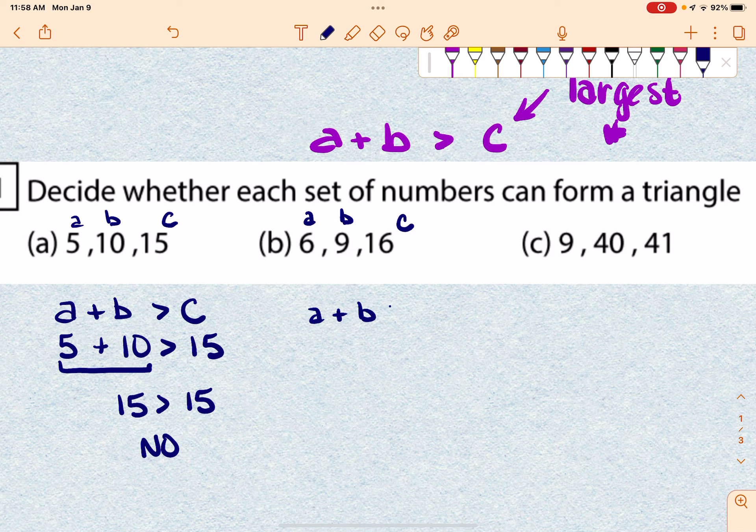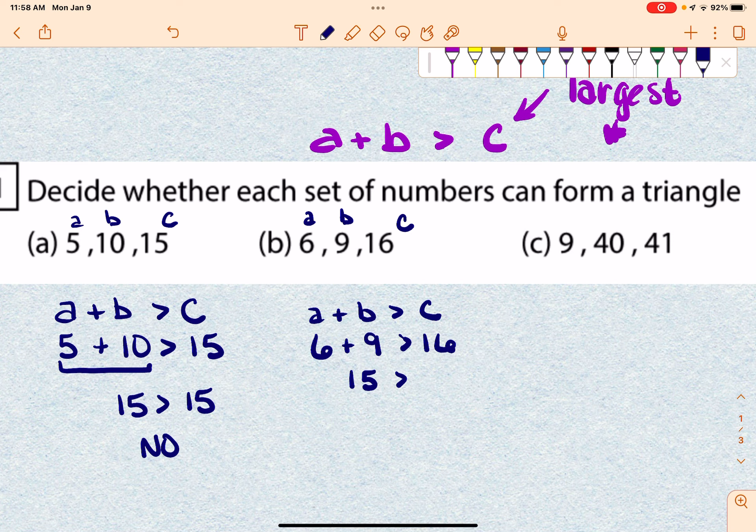Doesn't really matter which way you do them, but that's the easiest way to set up. A and B are just going to be the two smaller sides. So 6, 9, and then this is going to be 16. So this is going to be 15. This is 16. So 15 is not greater than 16, so this one would be no.